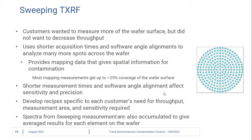Customers wanted to know more about the contamination on their wafer surface outside of the three to five measurement points in the traditional TXRF measurement, but they didn't want to decrease their throughput. So sweeping TXRF was developed because it uses shorter acquisition times and software angle alignments to analyze many more spots across the wafer, providing mapping data with more spatial information about the contamination.